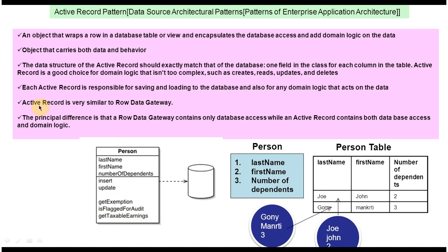The next point is that Active Record is very similar to Row Data Gateway. I explained the Row Data Gateway design pattern in another video — you can watch that first and then come back to this one to better understand the difference.